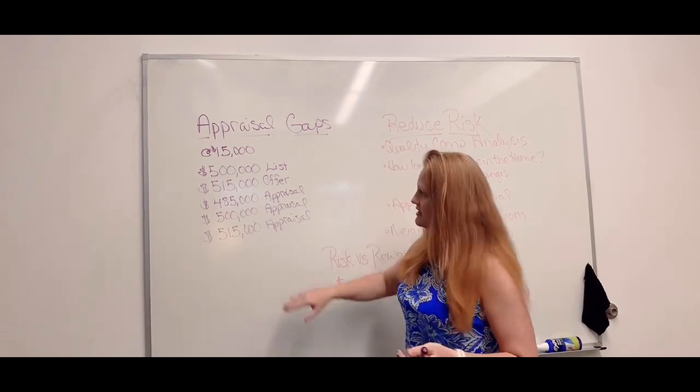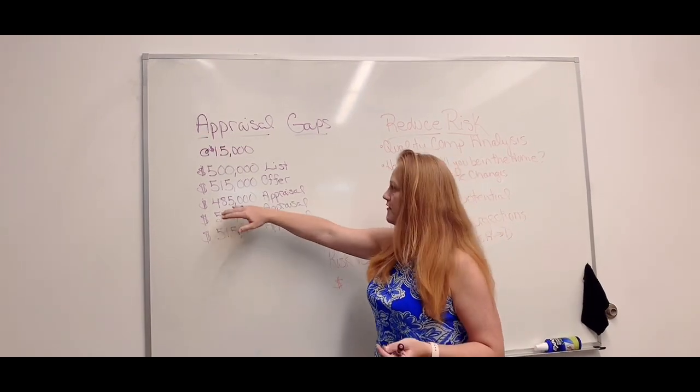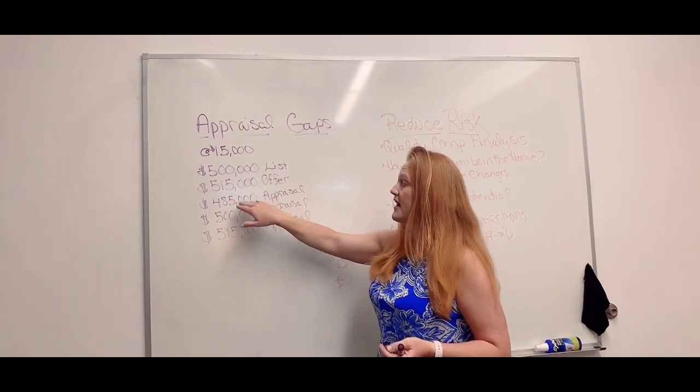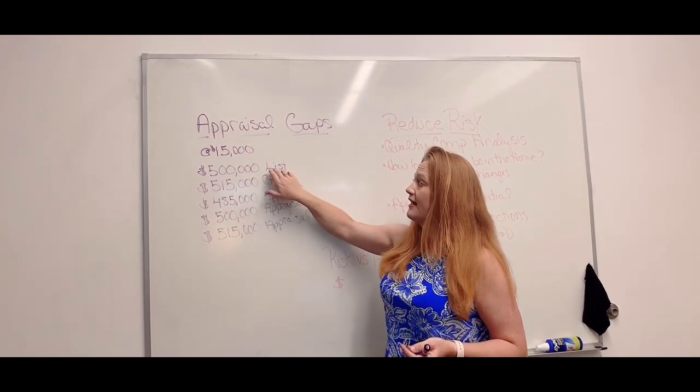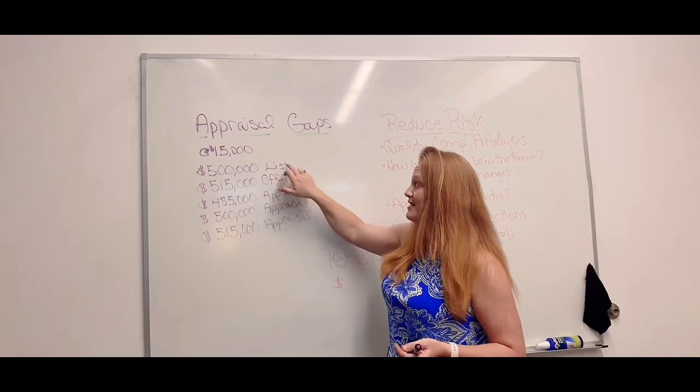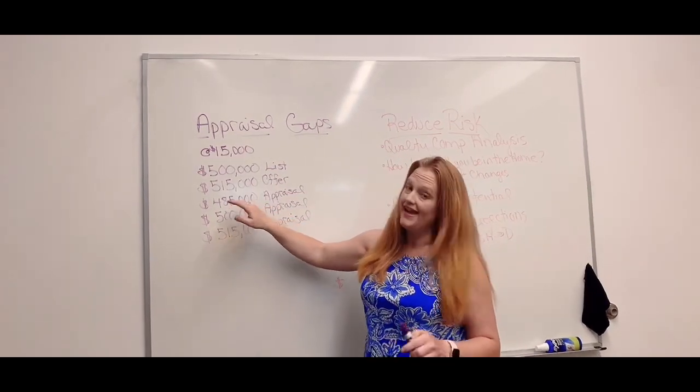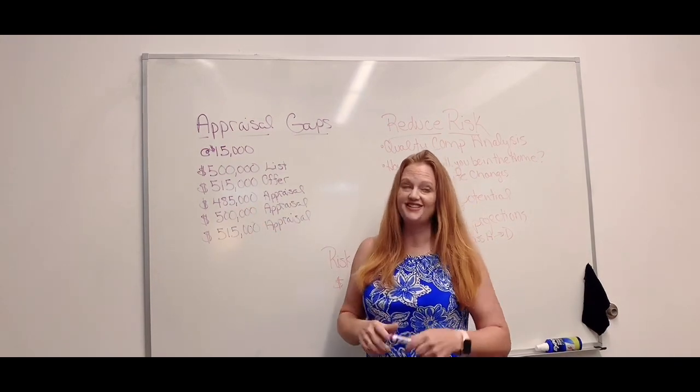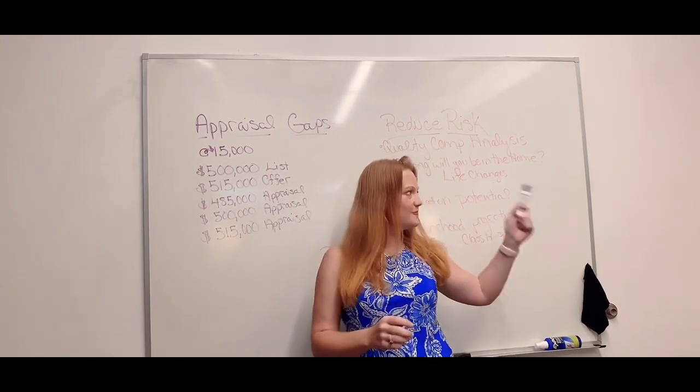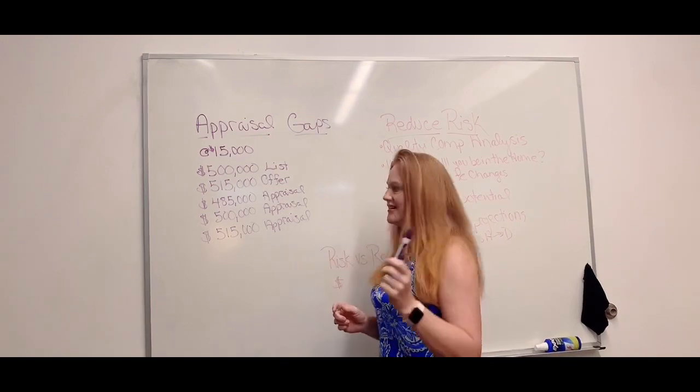What that actually means is, let's say we have three examples. The first being, the appraisal comes back at $485,000. The list price was $500,000. That means the agent overpriced it, but it doesn't really matter sometimes. You want to make sure when you have a buyer's agent that they know how to do a comp analysis, but that goes back to the risk reward we're going to talk about in just a minute.